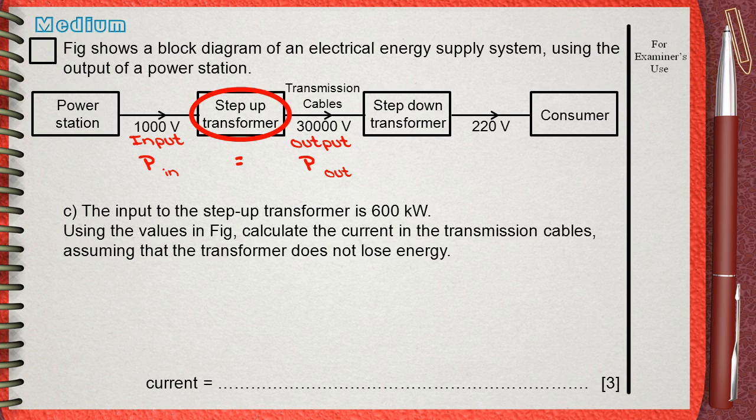He says that the power input of the transformer is 600 kilowatts, which is 600000 watts. This means that also the power output is 600000 watts.